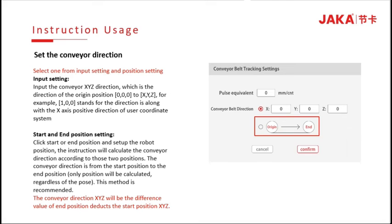This method is recommended. The conveyor direction x, y, z will be the difference value of the end position minus the start position x, y, z.